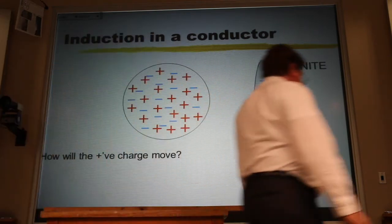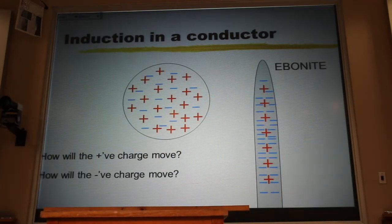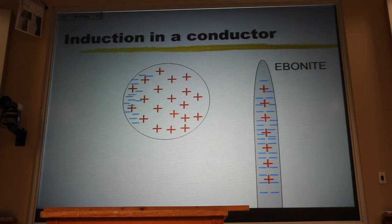It's the electrons that move. And how are they moving? Yeah, they're repelled by that rubber rod, so they go over there.